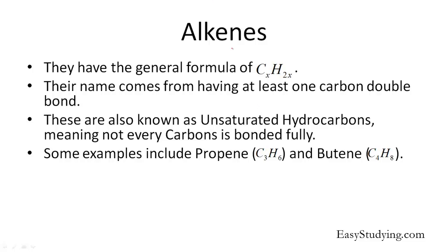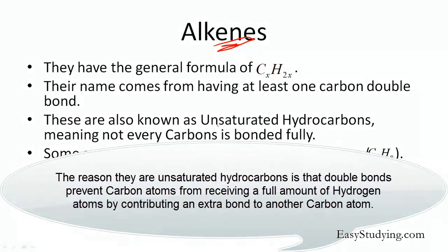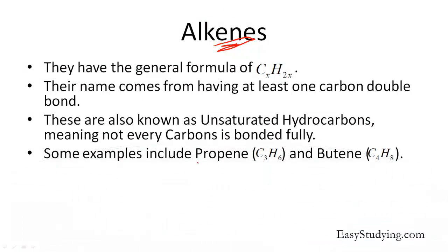The next group is the alkenes — the -ene group. They have the general formula CxH2x. So for every one carbon, we multiply by two to get the amount of hydrogen. Their name comes from having at least one carbon-carbon double bond. They are unsaturated hydrocarbons because not every carbon is bonded fully. One example is propene, which has the formula C3H6. Since it's an alkene, we multiply the number of carbons by two to get the number of hydrogens.